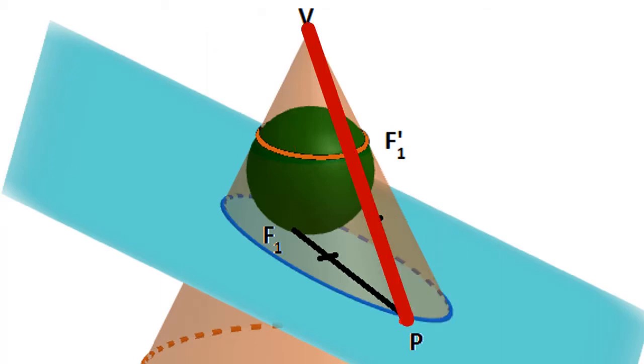That segment PV will be tangent to the sphere at a point which we will call F1 prime. Because PF1 and PF1 prime are each tangent to the sphere, they will have the same length.